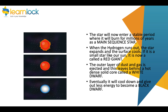This is the stage at which our Sun is currently. What happens next depends on the size of the star. For a star the size of our Sun, when the hydrogen runs out, the star expands and the surface cools — it will now start to become something called a red giant.